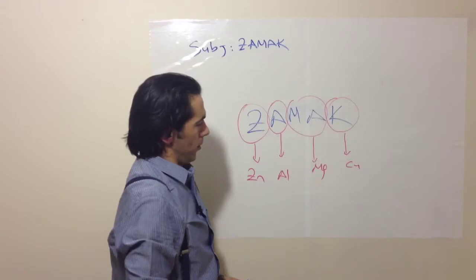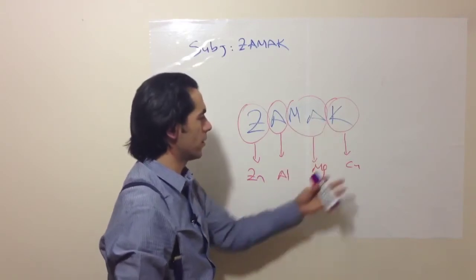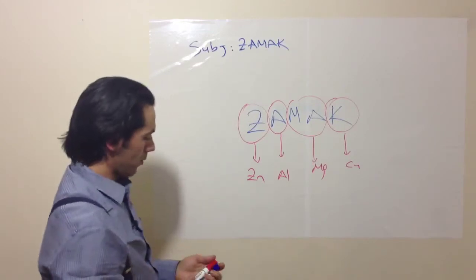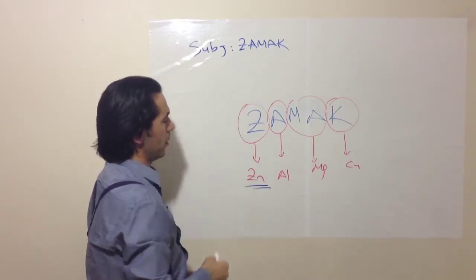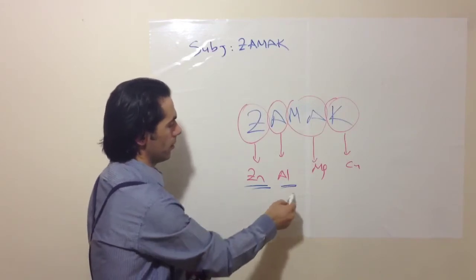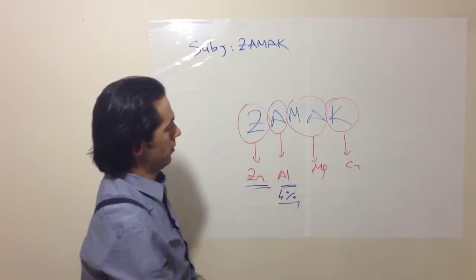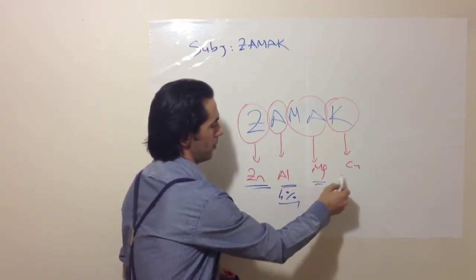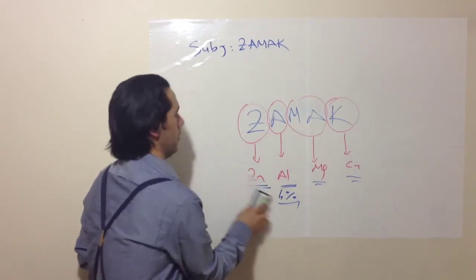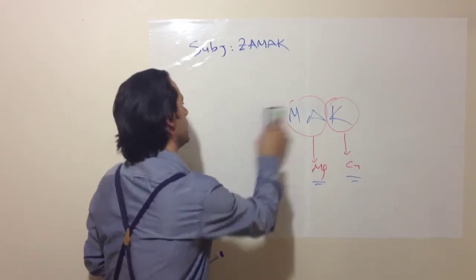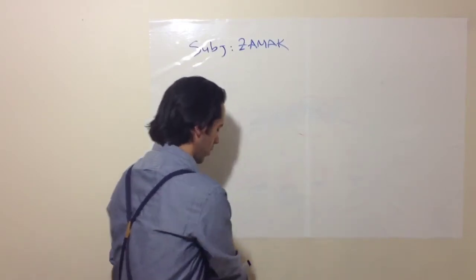So that's Copper. As you know, that's our base metal in our alloy. Aluminium is used at 4%, and we have other additive elements - Magnesium and Copper. Now I would like to talk about Aluminium.